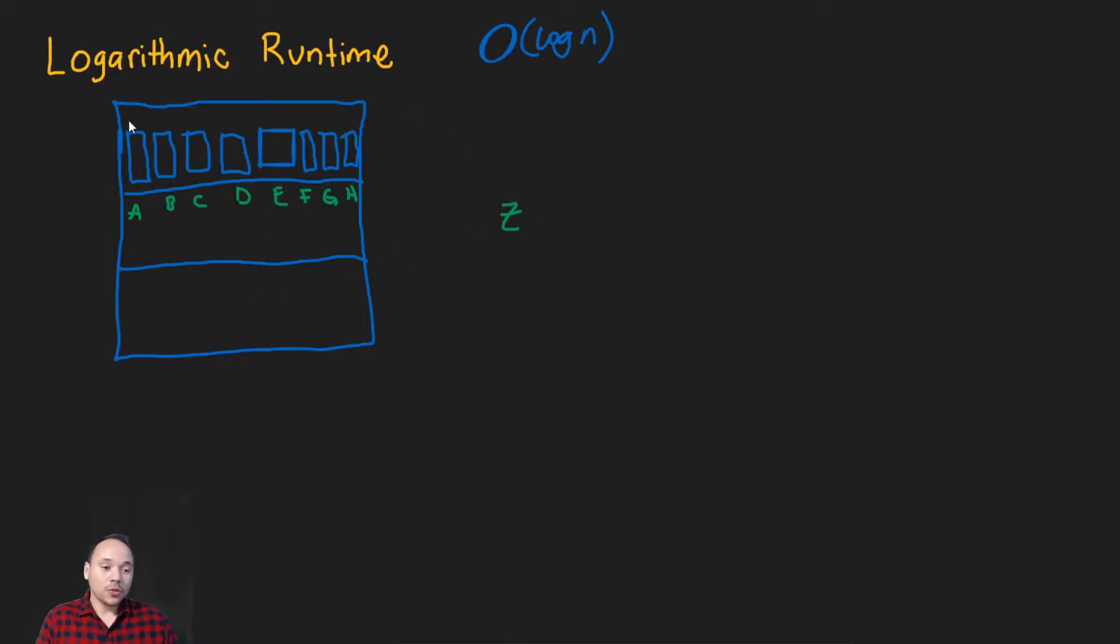So what we do, we know it's in this row. We're going to divide in half every time. Let's say we take this one in the half, let's say D. So Z is to the left or to the right of D. We know it's on the right side. So we know it should be any of these books, if any.